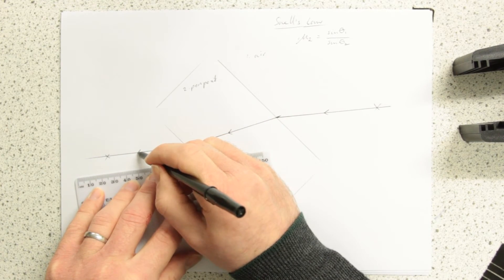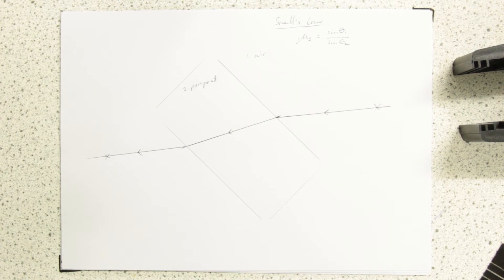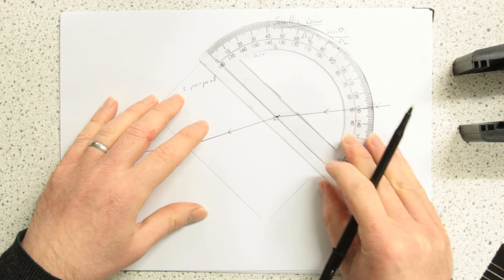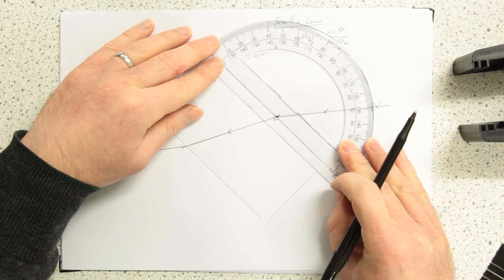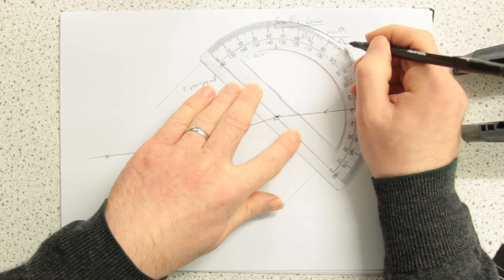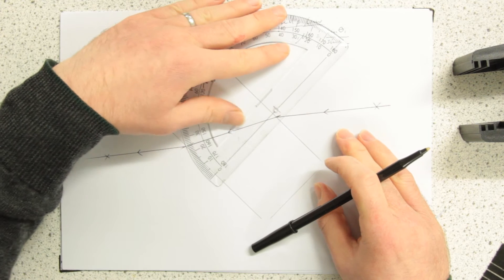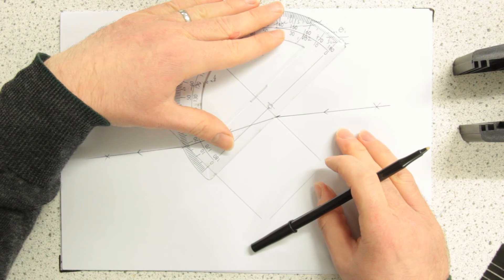And you'll remember that this ray should be parallel with that ray. Now we're going to measure our angles. We always measure angles between the ray and a normal. And a normal line is at 90 degrees to the surface.